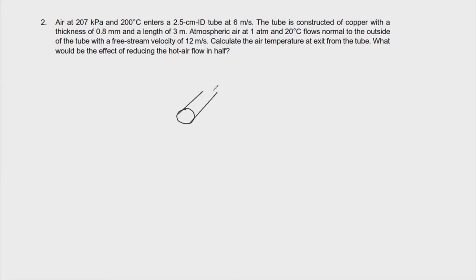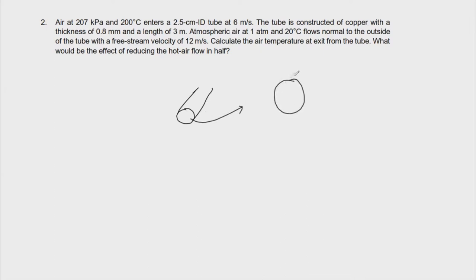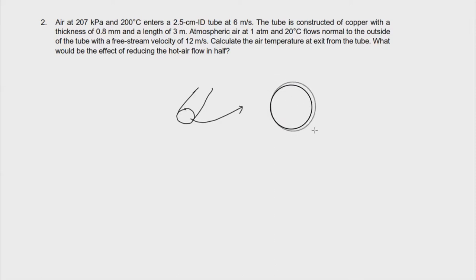It has a pipe, and then this pipe has a fluid that is flowing on the inside — that is air, the same air that's happening here in this tube. So, we have here the inner diameter, and then it has an outside diameter, since it has a certain thickness.